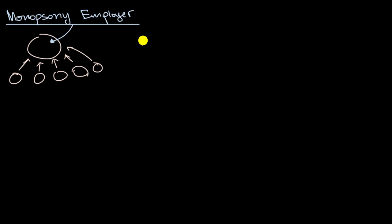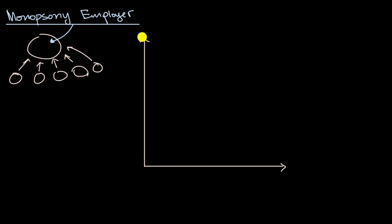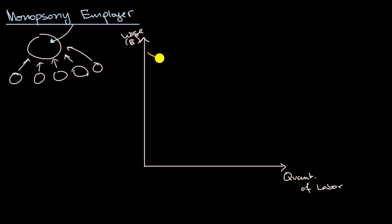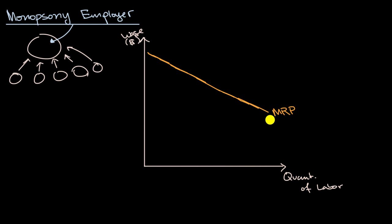We've already talked about the rational quantity of labor that a monopsony employer would hire. You have your wage on the vertical axis in dollars, and your quantity of labor on the horizontal axis. We could think about our downward sloping marginal revenue product of labor — every incremental unit of labor, you get a little bit lower marginal revenue from that input. This is our marginal revenue product, MRP — marginal revenue product of labor, because you could also have marginal revenue product of capital or land or other factors of production.